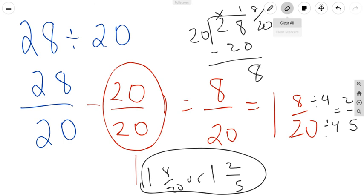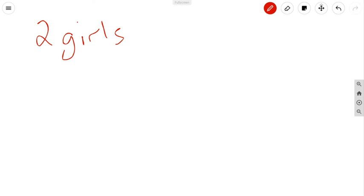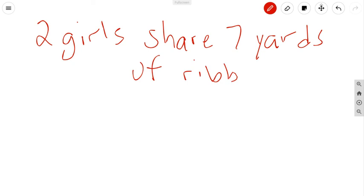All right, I'll do a couple of examples of the word problems here. I'll just do one because they're really kind of easy. If we do two girls share seven yards of ribbon. Okay, what that really means is, well, what are they sharing? Okay, well, they're sharing the seven yards. So that means that they're taking the seven and they're dividing it between the two of them. So that's the first thing.